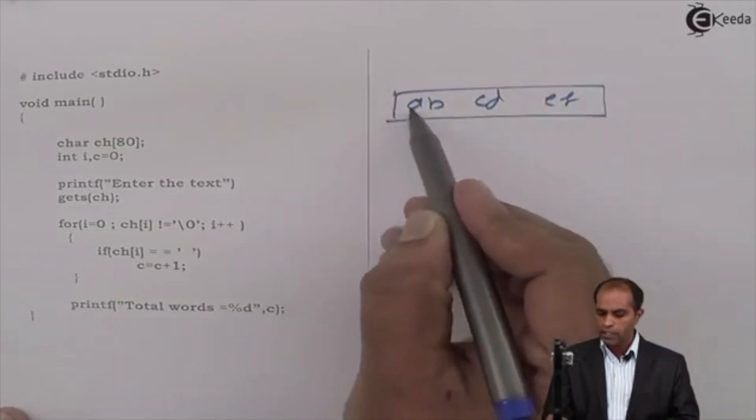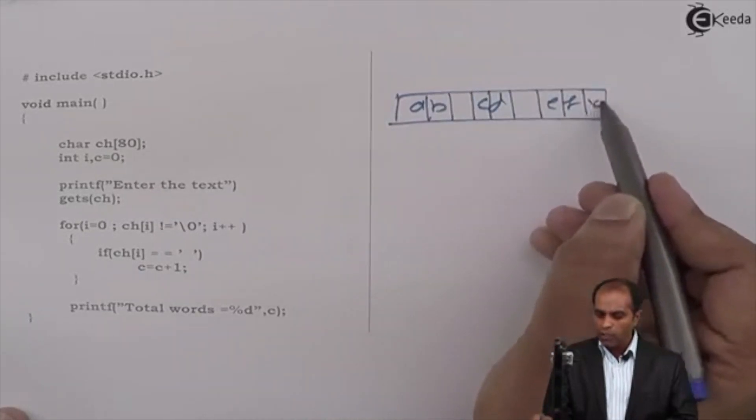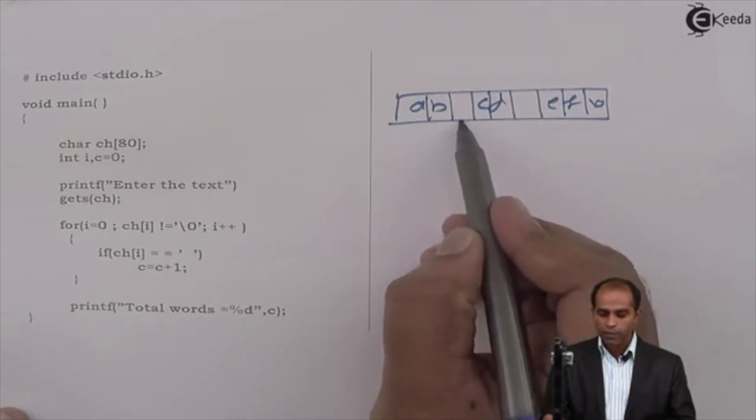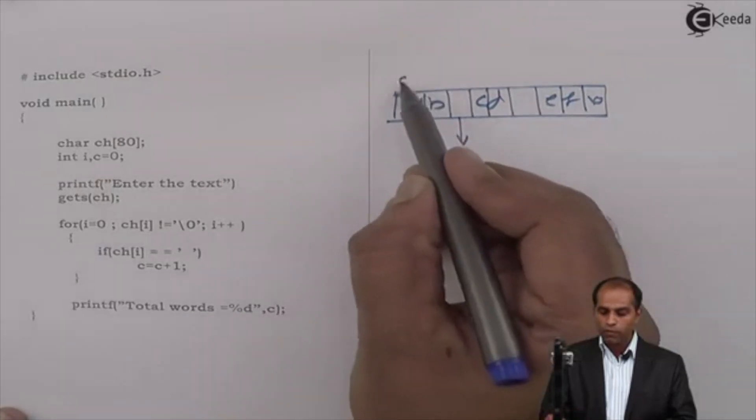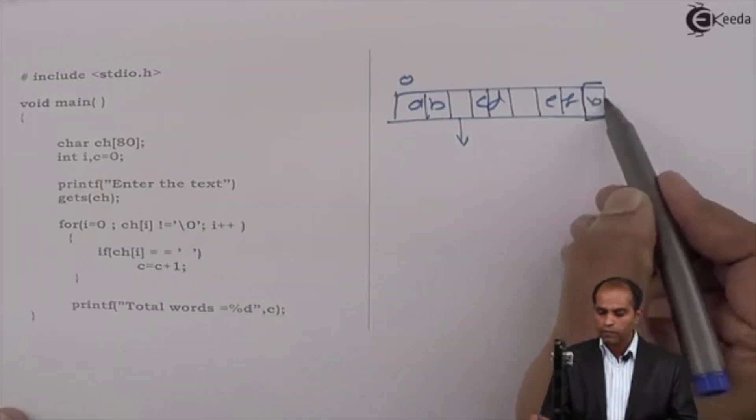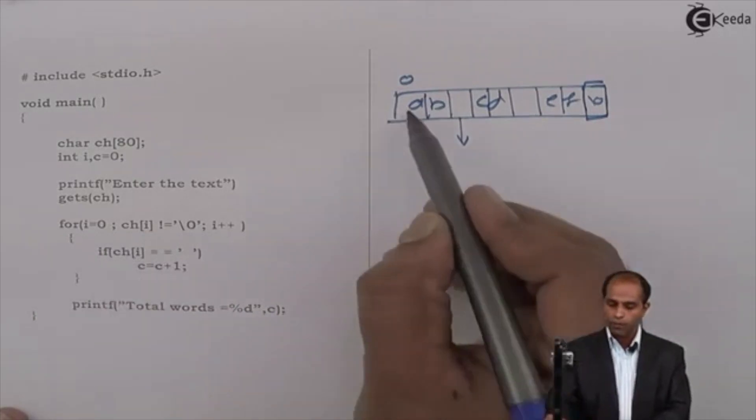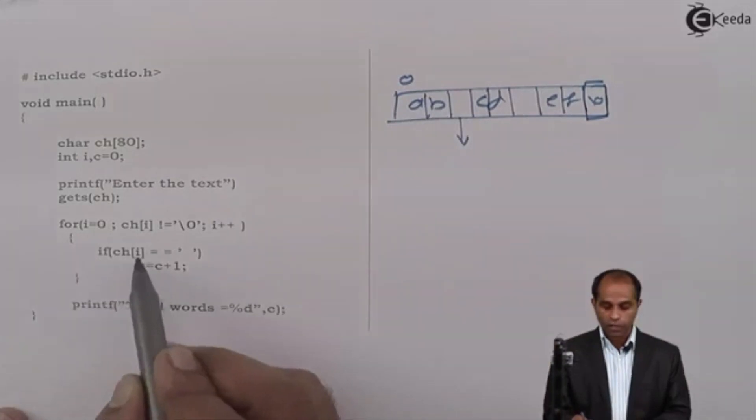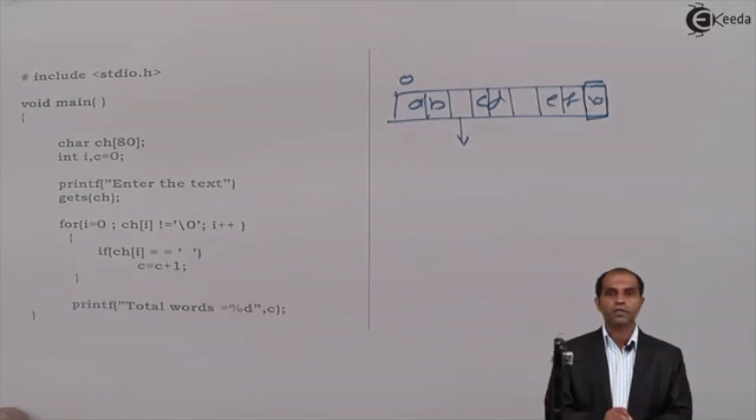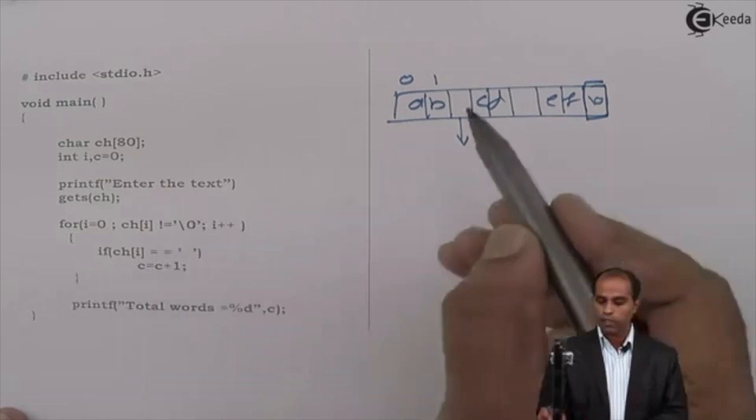So I have, say, ab space cd space ef. This is my CH. Counter is set to zero. Every time counter is increased, only when the blank space is found. For that, what it does, I'll use this particular condition. This loop takes the value from zero to null character. So I'll say CH of I equal to blank space. If blank space, then increase the value. If not, avoid doing any operation. If will not do any operation, go back to I plus plus. I is one, CH of one not equal null, true. CH of one equal to blank space? No, in the sense, again go back. I becomes two.